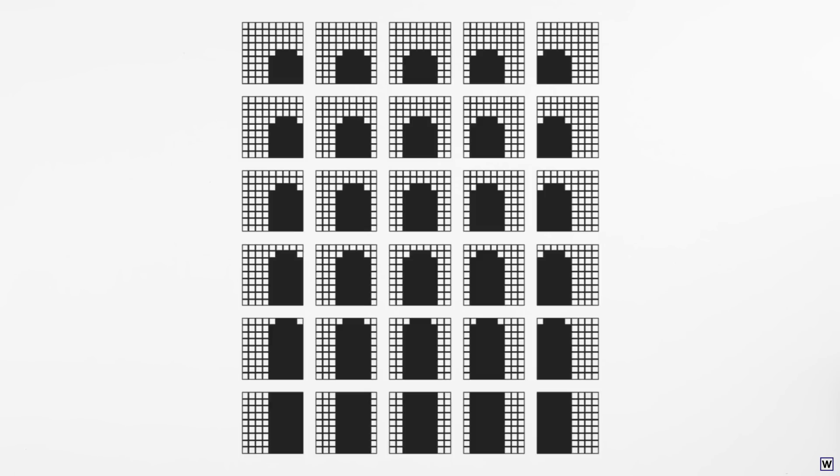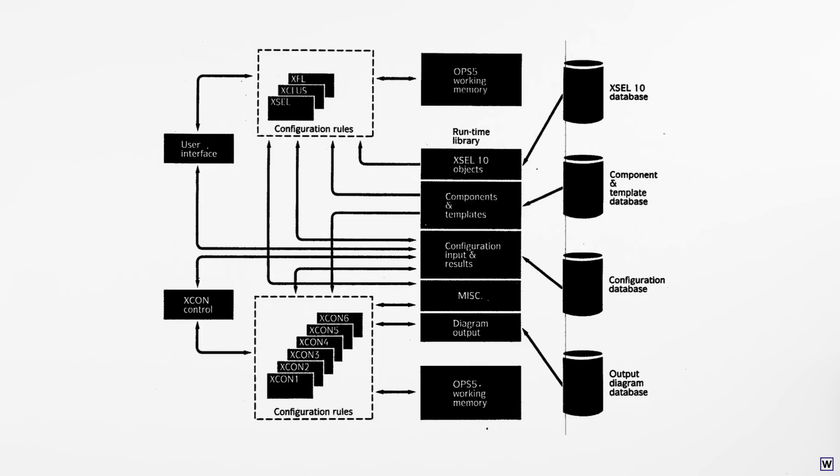We would have to completely start over. Piles of hand-coded rules are ridiculously complex to maintain and update. Rewrites just aren't feasible. By 1987, DEC's R1 system had over 10,000 rules and over a person's century of time invested.